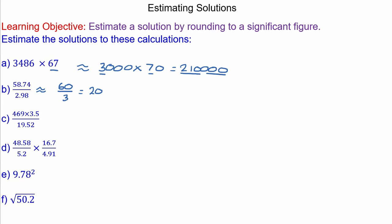Question C: 469 would become 500, because a 6 would round up a 4 to a 5. And 3.5 would become 4. Divided by 19.54, then 9 would round up a 1 to a 2, so that becomes 20. Let's make it 2000. Divide that by 20, and you can simplify by dividing both by 20. And this makes 100 divided by 1, which is 100.